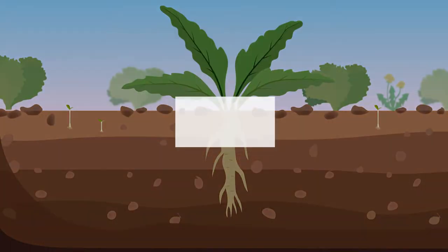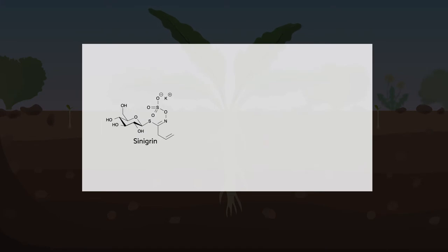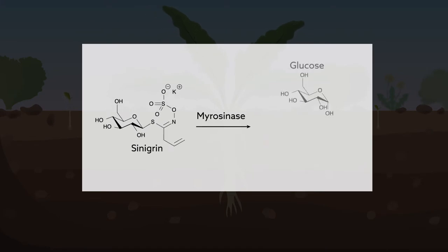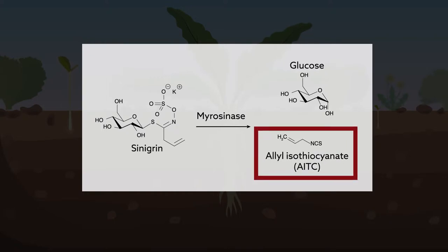For example, horseradish produces the molecule synagrin, which is hydrolyzed in the presence of the enzyme myrosinase to generate allyl isothiocyanate, or AITC.